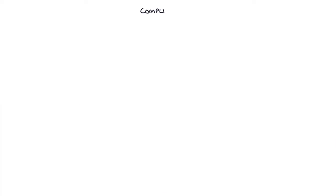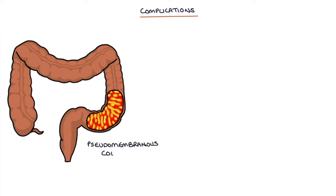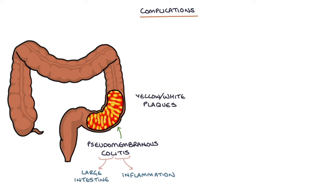Let's talk about complications. Pseudomembranous colitis is characterized by inflammation in the large intestine, with yellow-white plaques that form pseudomembranes on the inner surface of the bowel wall. This is seen during a colonoscopy and confirmed with biopsies to examine the histology.